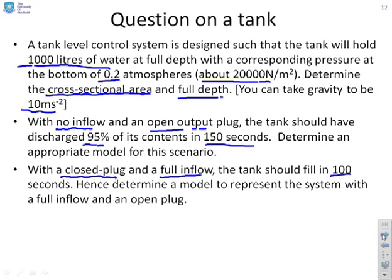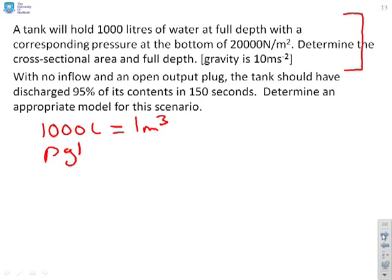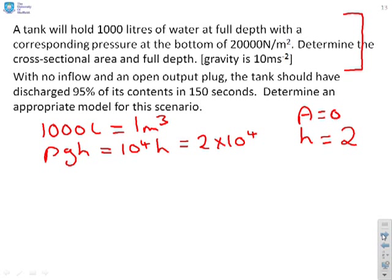Part A: the capacity is 1,000 litres, which equals 1 m³. The pressure at the bottom of a tank is ρgH, which equals 10⁴H. We're told that at full depth this pressure is 2×10⁴, so H = 2 metres. The cross-sectional area must therefore be 0.5 m² and the depth is 2 metres.